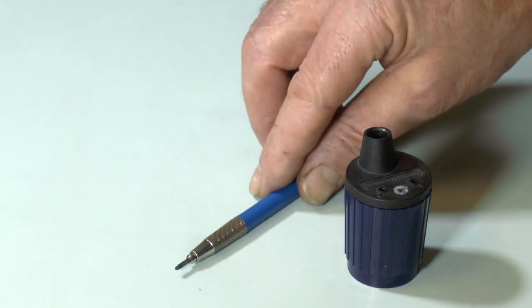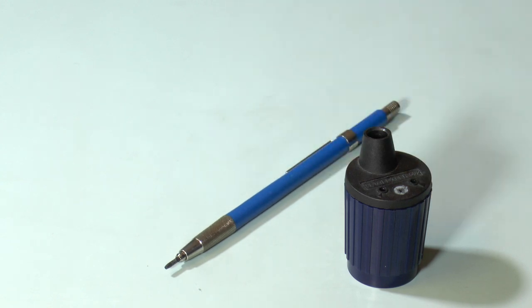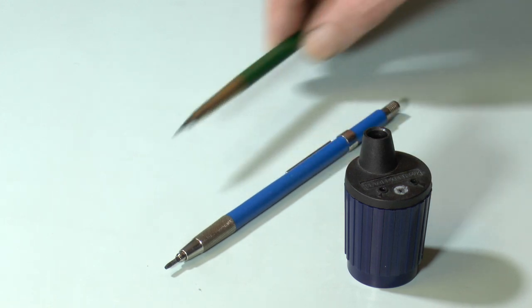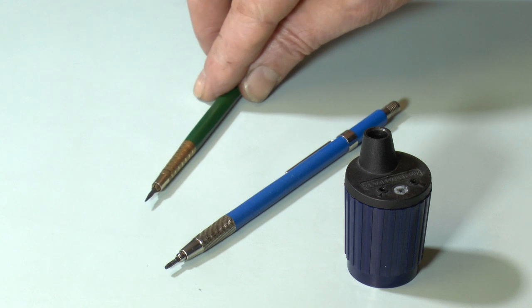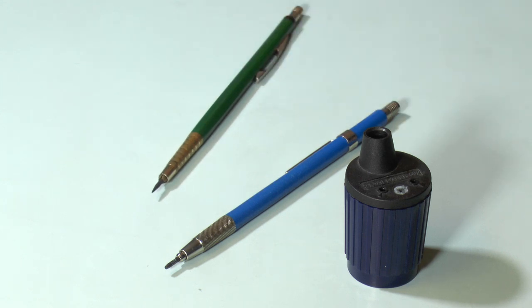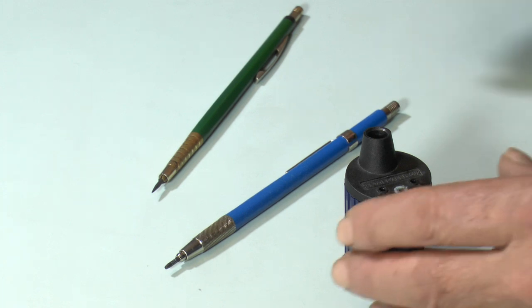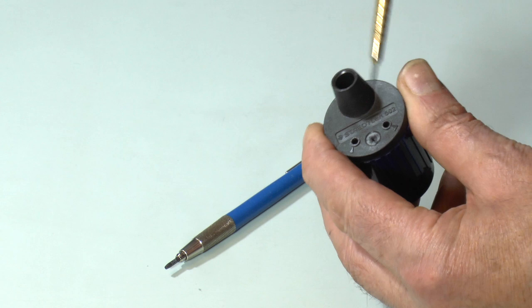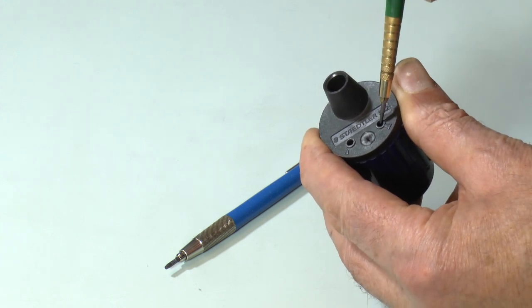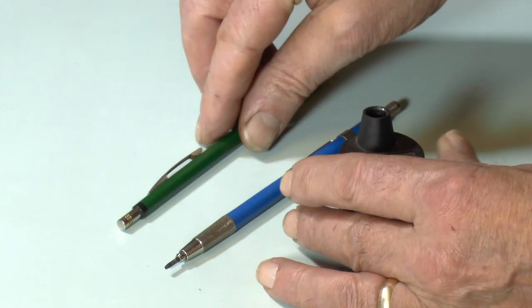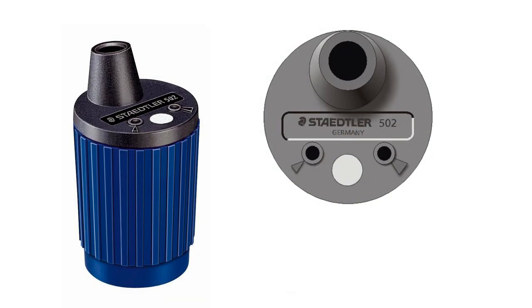First, clutch pencils, which you might know as lead holders, require different points depending on what they're about to be used for. So the tub is set up to cater for the sharp point needed for drawing, or the blunter point preferred for writing. And that's where these two small holes feature. The triangular symbols next to them indicate the two kinds of points.